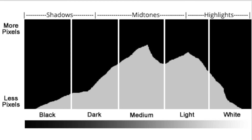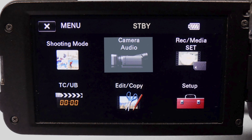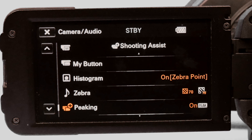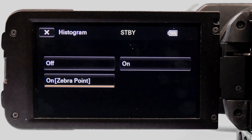The histogram is a graphic representation of the grayscale in your image. Pure black is on the left and pure white is on the right. The vertical axis shows the intensity for each grayscale value. Shadows, mid-tones, and highlights are represented left to right. To turn it on, go to the menu, select camera audio, scroll down the menu, and select histogram.